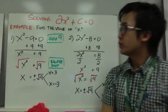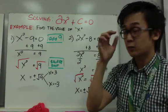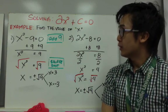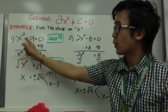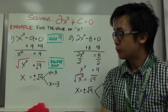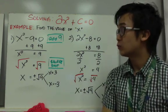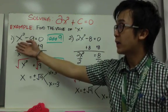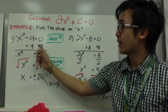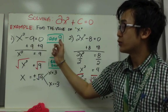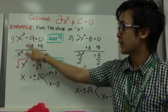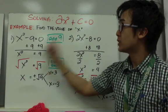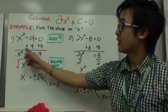Let's have some examples of the equation of the form ax squared plus c equals zero, and let's find the value of x. For the first example, we have x squared minus 9 equal to zero. Similar to solving a linear equation, to get x by itself, we need to get rid of negative 9 by adding 9 on both sides, giving us x squared equal to 9. We're solving for x, and x squared still has an exponent of 2.